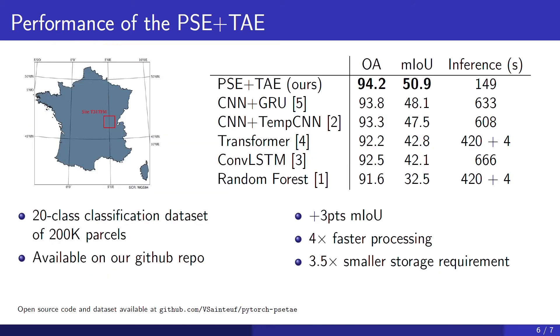So we assembled those two modules in a single architecture, where our shared pixel set encoder embeds the images of the sequence, and the resulting sequence of embeddings is fed to a temporal attention encoder. To test this architecture, we assembled a large data set of annotated Sentinel-2 images. It's comprised of around 200,000 parcels that belong to 20 different classes. The data set as well as the code is available on our GitHub repository.